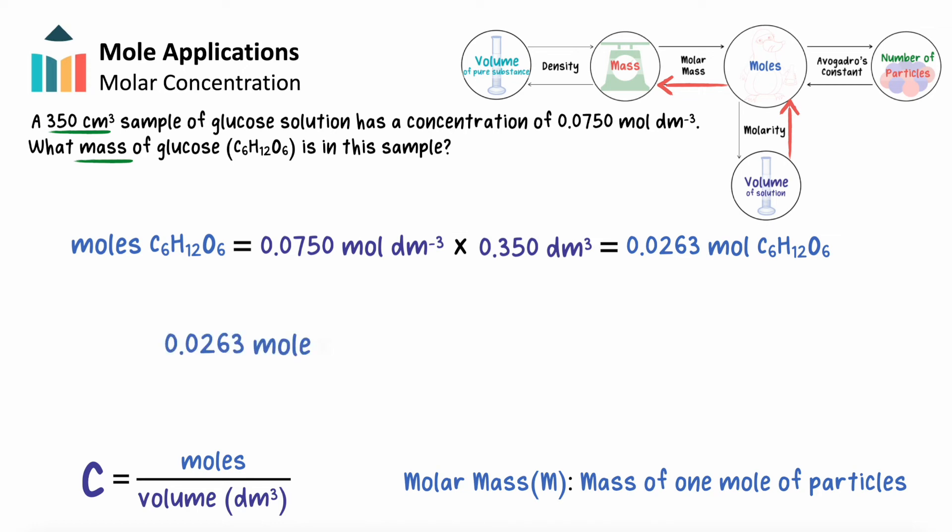We'll then compare the moles of glucose to its molar mass, that is the mass of 1 mole of glucose, and determine its total mass in solution. Our answer here is much smaller than before, which should make sense. Solutions are mostly water, so the amount dissolved will usually be much smaller than the total mass.